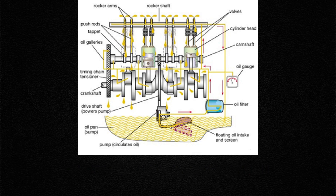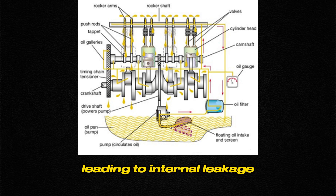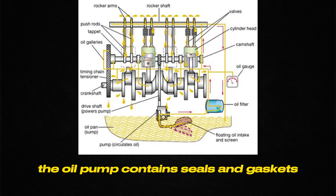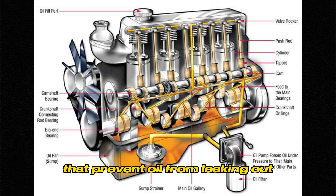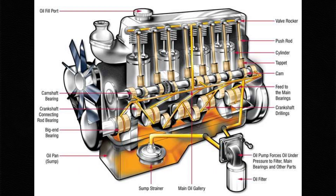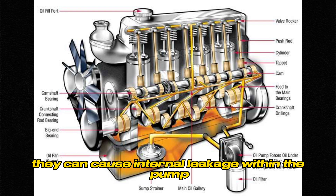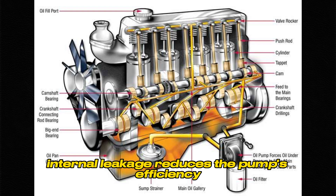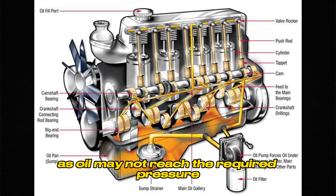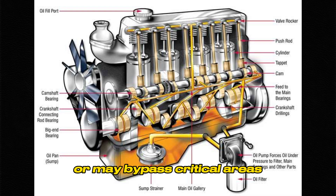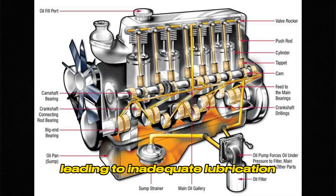Seal failure leading to internal leakage: the oil pump contains seals or gaskets that prevent oil from leaking out. If these seals or gaskets become damaged or worn out, they can cause internal leakage within the pump. Internal leakage reduces the pump's efficiency, as oil may not reach the required pressure or may bypass critical areas, leading to inadequate lubrication.